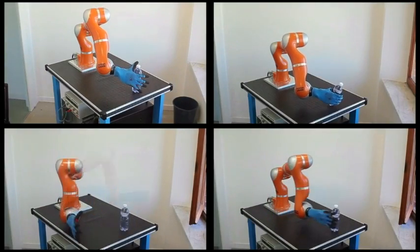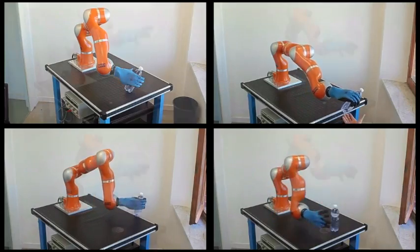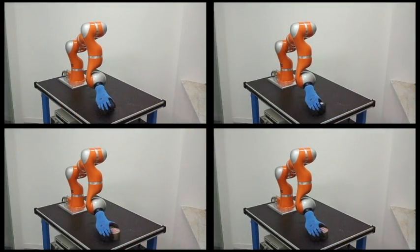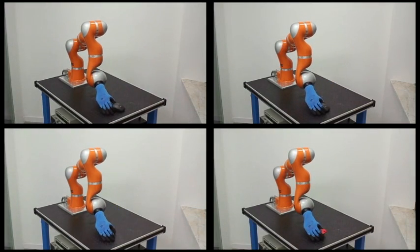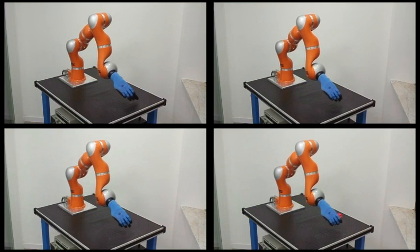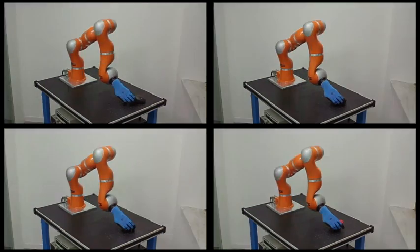To test the usage of the PISA IIT soft hand in a robotic scenario, the hand was mounted onto the end-effector flange of a KUKA lightweight robot arm. Notice that the robot was manually programmed to reach an area where the object was approximately known to lie and no grasp planning phase was executed.